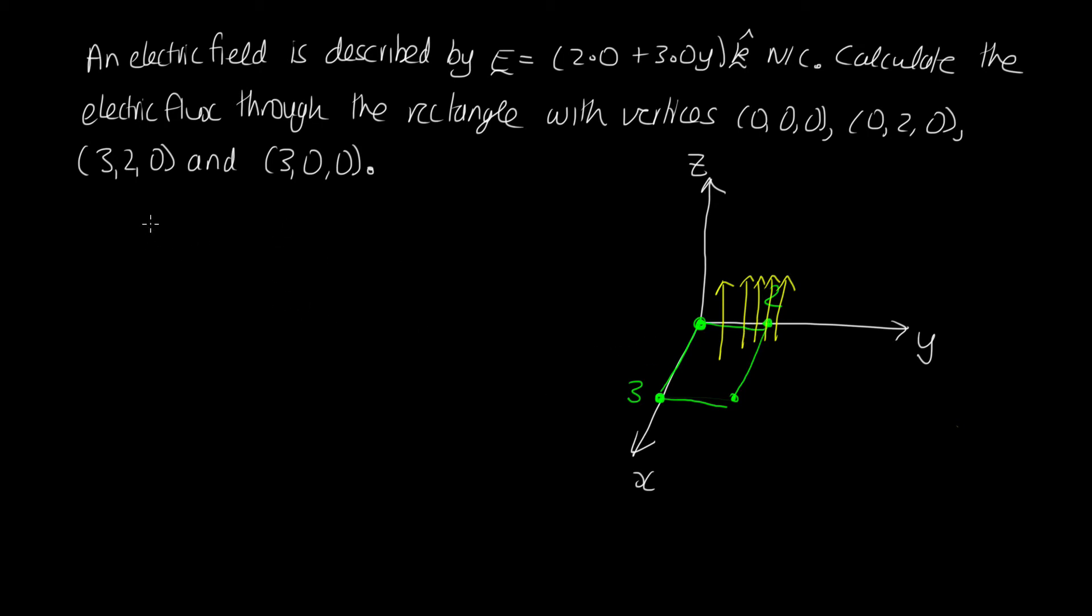Now to calculate our electric flux, we're going to need to use our equation that the electric flux is equal to the integral of the electric field with the surface area of the shape that we're considering. Now in this case, because this is a rectangle in the x-y-plane, the area is going to have a direction in the k-direction, the z-direction like this. So we'll need to come up with an expression for dA.